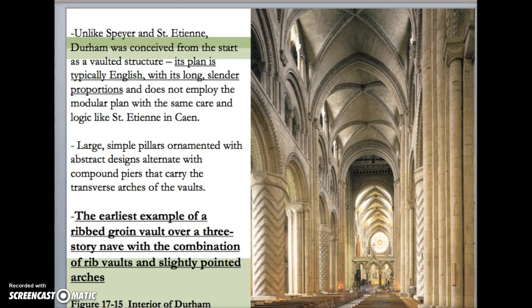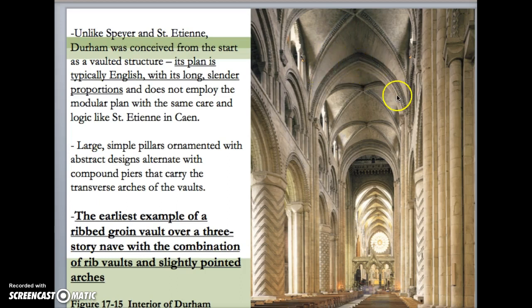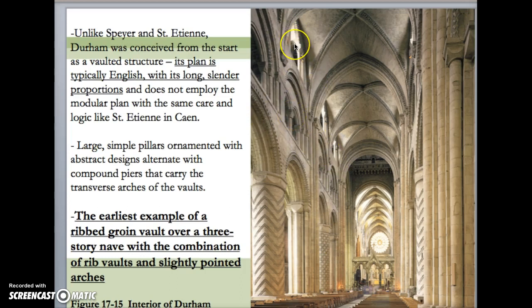We also spent a fair amount of time looking at Durham Cathedral in England. This is the earliest example of a ribbed groin vault. You notice that extra addition onto the vault making it a ribbed vault — it's also a pointed ribbed vault. This is the earliest example of that covering a three-story nave: you have the aisles, the triforium (sometimes called the tribune), and then the clerestory at the top letting light filter in.